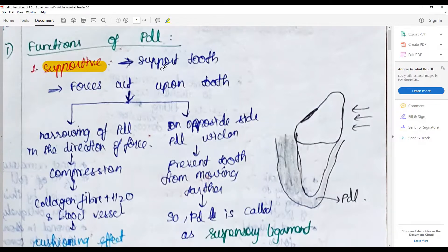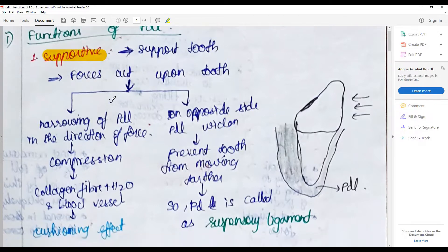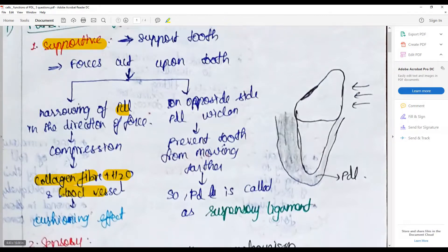It supports the tooth and dissipates the force acted upon the tooth. By narrowing the PDL along various directions, it leads to compression of the elements of the PDL. This compression is carried on by the collagen fibers, water, and blood vessels, resulting in a cushioning effect and dissipation of the forces in various directions.